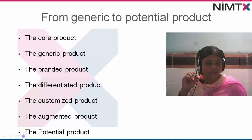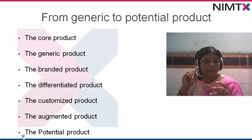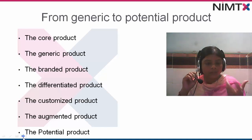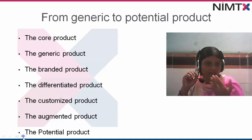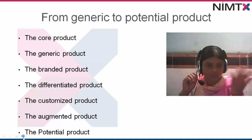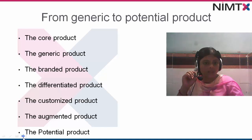If we are talking about the core product, you can take the example of bread or water. The main functionality of water is that it will fulfill your thirst need. Its base is to complete its core functionality for your need. So it is known as the core product.